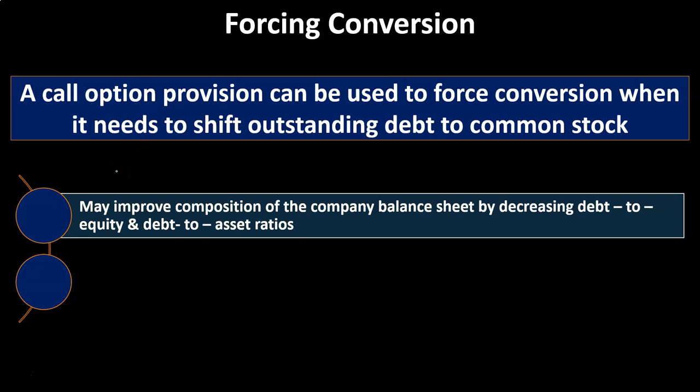Forcing conversion may improve the composition of the company's balance sheet by decreasing debt-to-equity and debt-to-asset ratios. If you force bondholders to convert bonds to stocks, you'll have less debt outstanding, you'll be paying less interest, and you've converted the financing from debt to equity — meaning more stocks are out there. If it's beneficial to the company to have a mix leaning toward less debt and more equity financing, then forcing the conversion of convertible bonds from debt to equity could be very beneficial.